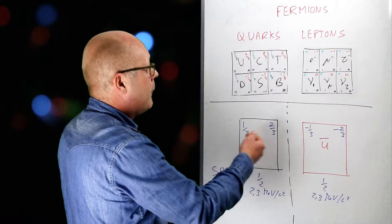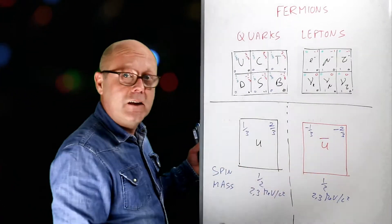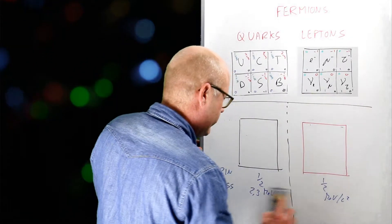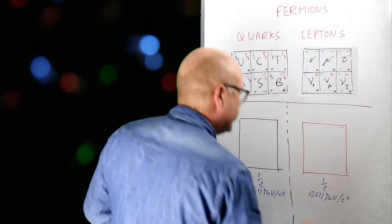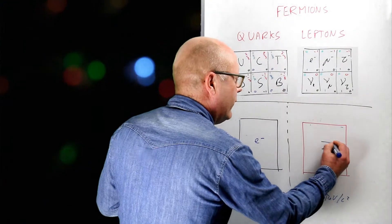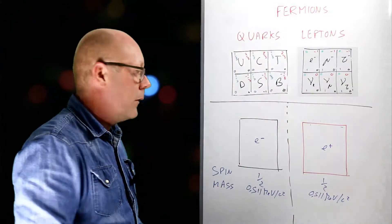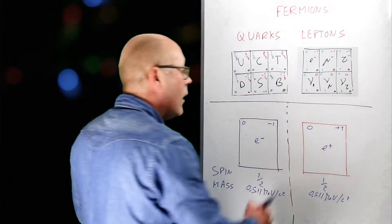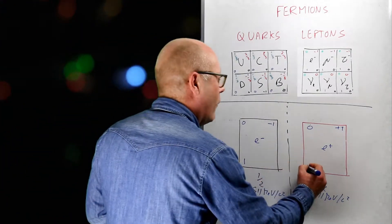For the up quark, the other quantum numbers are all zero, and they will stay zero also for the anti-up quark. Let's consider now the electron. The electron has a mass of 0.511 MeV. Its anti-matter counterpart is more conventionally called the positron. The charge of minus 1 for matter becomes plus 1 for anti-matter. The baryon number is zero. The lepton number was 1 for the electron; it will be minus 1 for the positron.